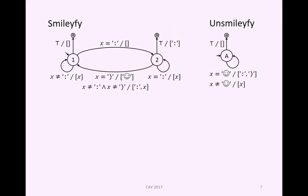If we look at the actual implementations as SFTs, here they are. Smileyfy is using two control states to match on the colon right-parenthesis pattern. When it finds this, it outputs this smiley character. Unsmileyfy just expands all of these smiley characters into this colon right-parenthesis pattern.